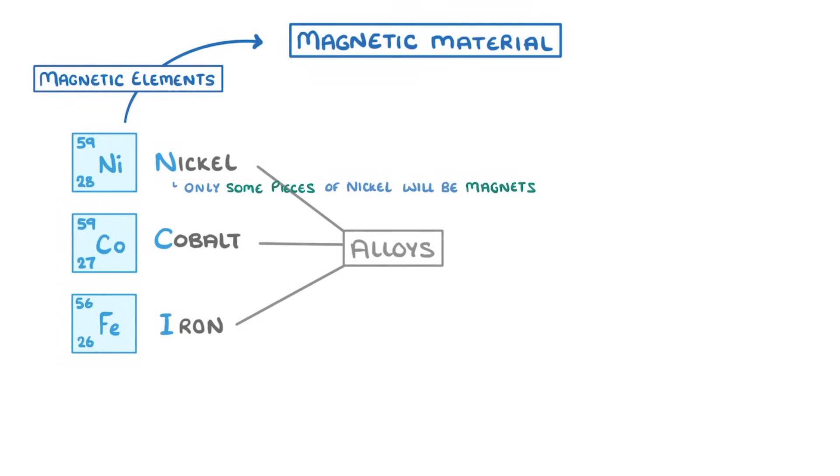The other common magnetic elements to know are cobalt and iron. And the alloys of these elements, like steel, also count as magnetic materials. And to help you remember this group, just remember that the first letters of each of the words spells NCIS.